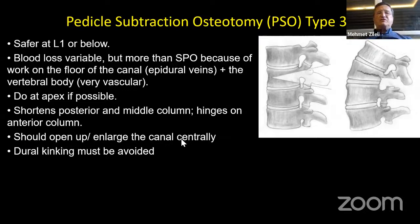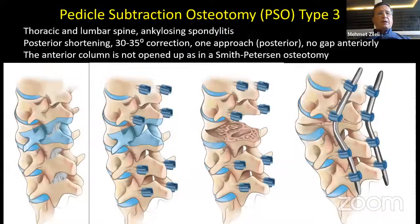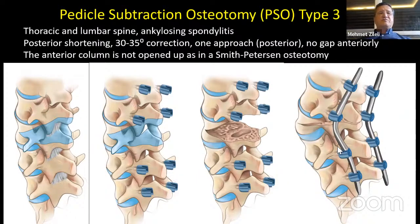PSO shortens the posterior and middle column and hinges on the anterior column. The canal should be enlarged centrally and dural kinking must be avoided. In case of a stenotic central canal, a wide posterior column decompression should be performed centrally and closing forces should be applied in cantilever and compression modes. With that technique, you can provide a significant increase in lumbar lordosis.